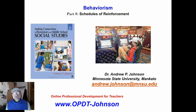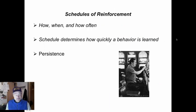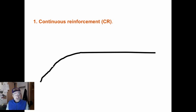Okay, the last thing we're looking at is schedules of reinforcement. And yes, I intentionally put a picture of slot machines here, and you will see why. But schedules of reinforcement has to do with how, when, and how often reinforcement is given. The schedule determines how quickly a behavior is learned, and it also determines how long it lasts once the reinforcement disappears. That's called persistence—how long the behavior lasts once the reinforcer disappears.